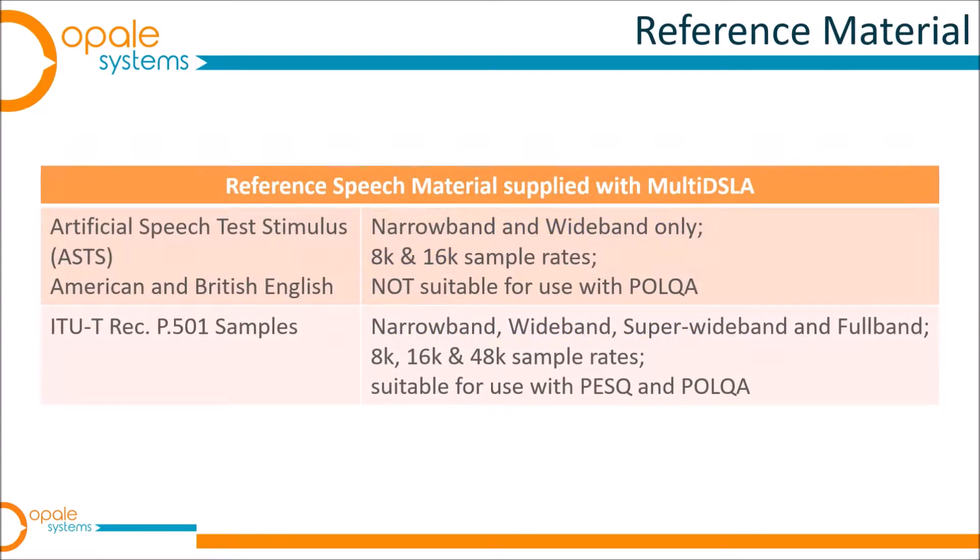The Opal MultiDSLA test system comes supplied with two types of speech material. One is called the Artificial Speech Test Stimulus or ASTS. These are very suitable for use with PESQ but unfortunately cannot be used with POLQA for a variety of reasons. The second type of material is from ITU recommendation P.501, which publishes reference speech material in a number of languages designed specifically for objective voice quality testing.